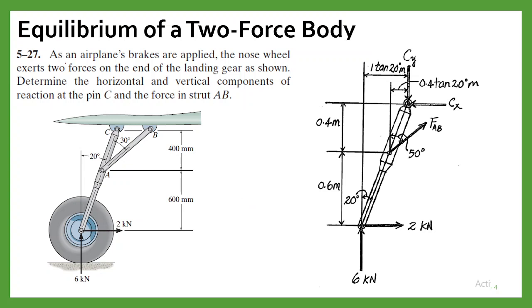Now let us solve a problem. As an airplane's brakes are applied, the nose wheel exerts two forces on the end of the landing gear. When the brake is applied, the nose wheel exerts these forces on the landing gear — one force and another force. We need to determine the vertical and horizontal components of the reaction at pin C, and also determine the force in strut AB.